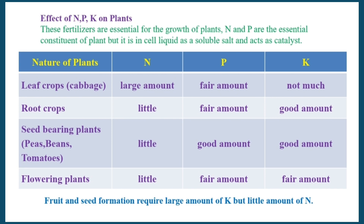For flowering plants: nitrogen — little, phosphorus — fair amount. Fruit and seed formation requires a large amount of K but a little amount of N.